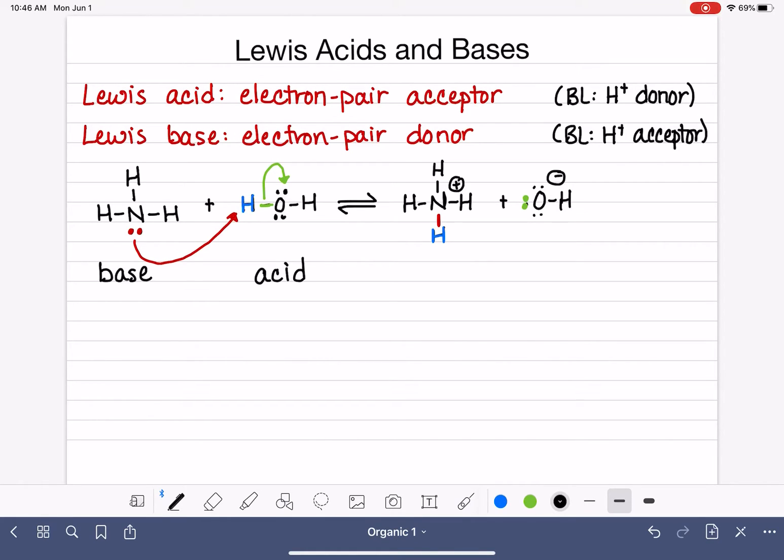So the NH3 is the electron pair donor because it uses the lone pair on the nitrogen to move hydrogen from one molecule to another.